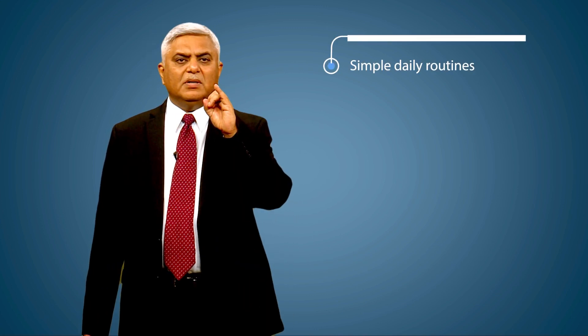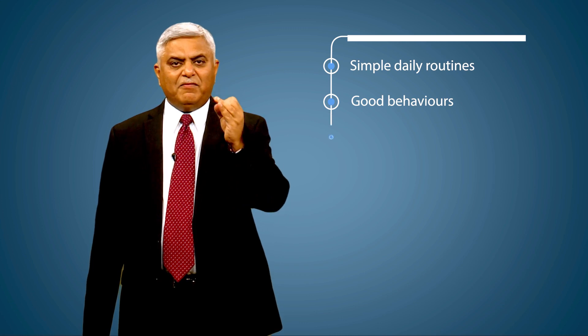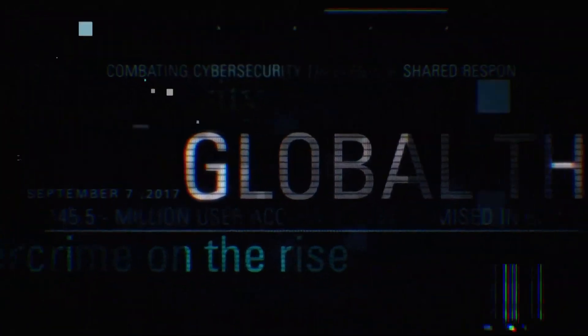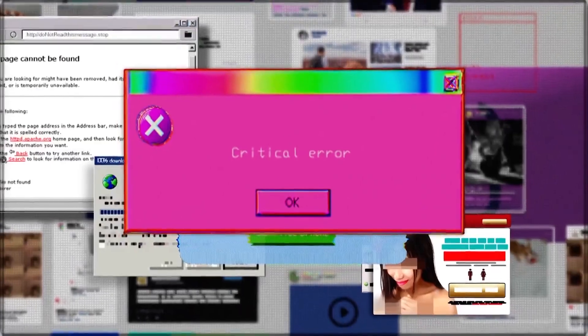Integration of cyber hygiene into personal life or an organization includes three basic components: simple daily routines, good behavior, and occasional checkups. Following them will ensure online health is in optimum condition, regularly warding off natural deterioration and common threats. There is no single standard or commonly agreed-upon mechanism for an organization to assess or demonstrate cyber hygiene — it can be tailored according to the target audience. Cyber hygiene is a business problem, not just an IT problem, and no two organizations will implement it the same way.